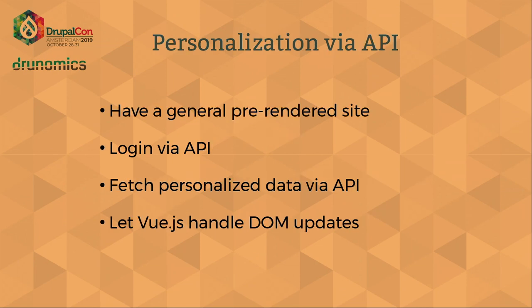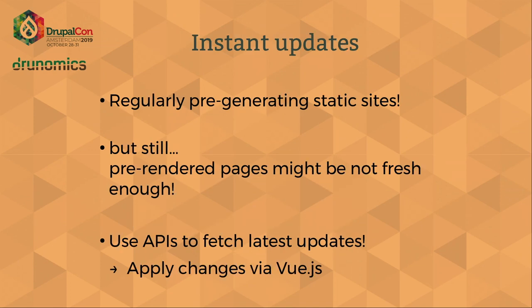For personalized content, you can just use the APIs. You have a general pre-generated site as Google would see it, and from there you use JavaScript-based logins and log in via API. You can then fetch additional data via APIs and use Vue.js to handle updates to the DOM and have updated content for the user. For instant updates, you could regularly pre-generate static sites — if updates every five minutes are sufficient for a small site that might be fine. You can also have the APIs look for more recent content after page load, fetch it, and update the site after the initial page load.